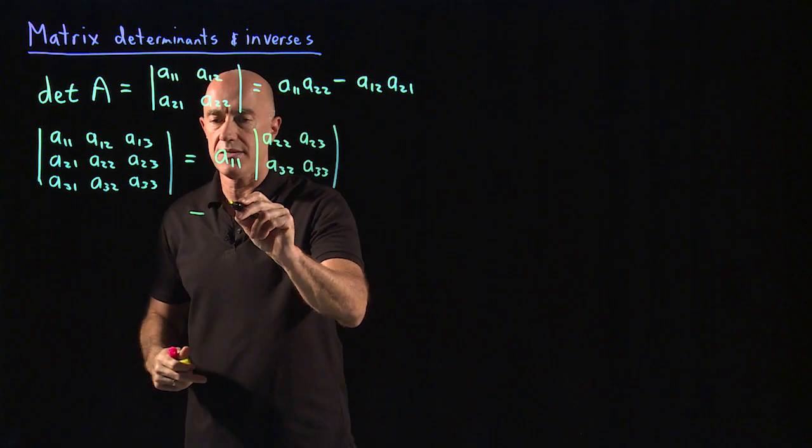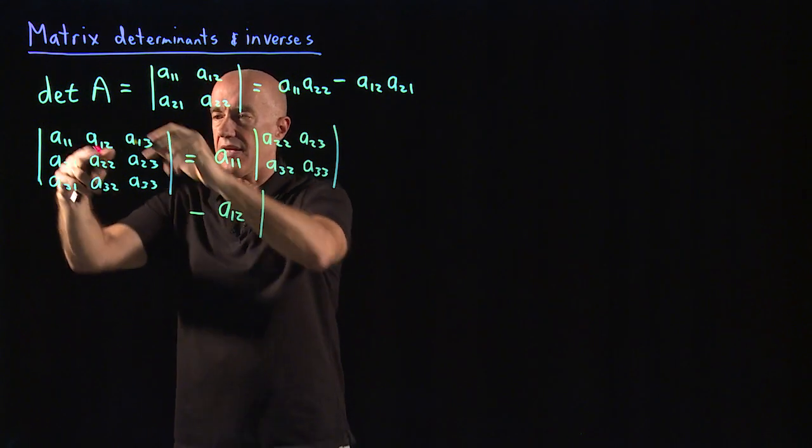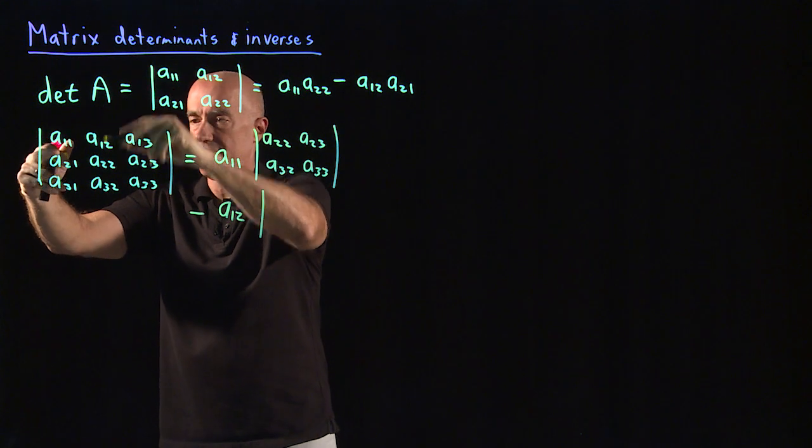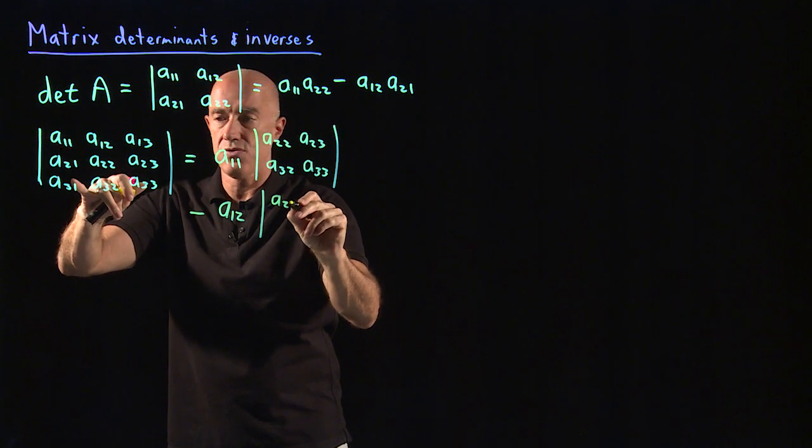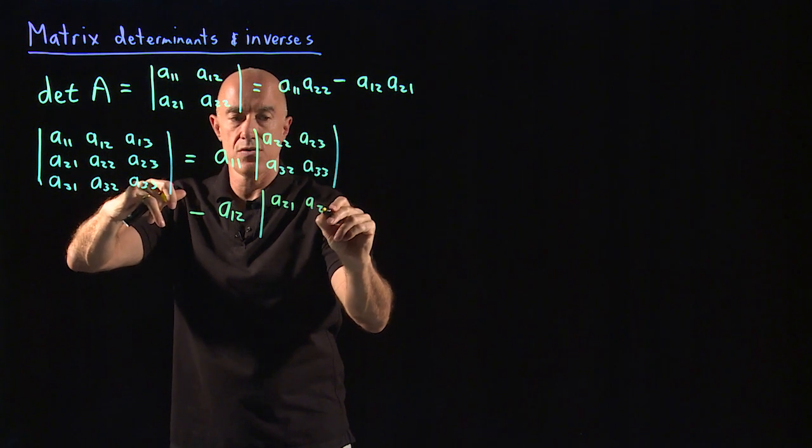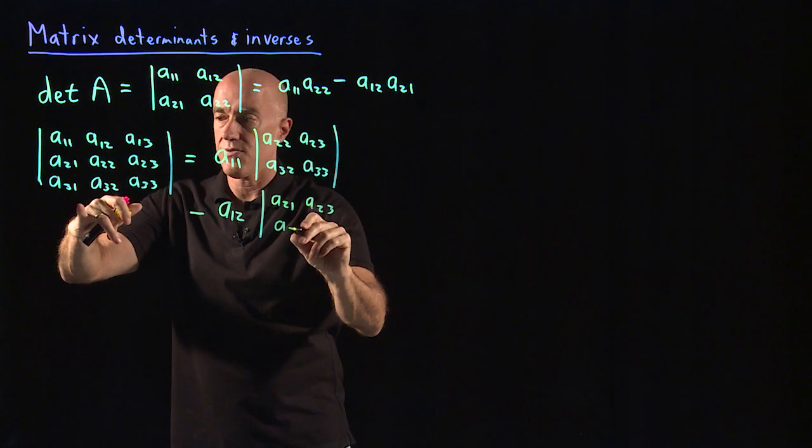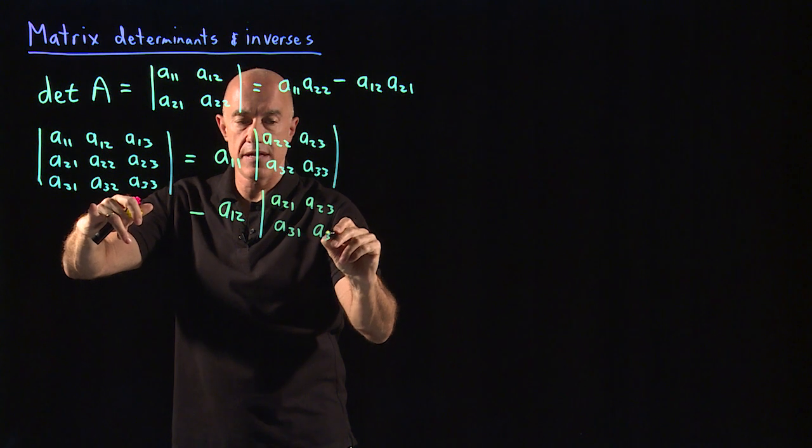Then you go on to the next element in the first row and you change the sign. So you have minus A12 and then you delete the first row in the second column. And you have the determinant of A21, A23, A31, A33.